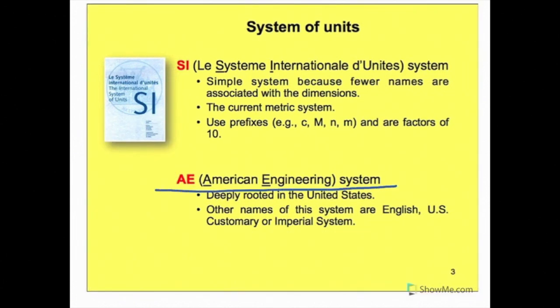The AE system is a system that's deeply rooted in the United States of America. What it means is that it has been used extensively in many papers, documents, projects, and so on in the United States. And since it is so prevalent or so widespread in their documents, it is still a system commonly used in their country. Other names of these systems are English system, the US customary system, or the imperial system. Basically, they are one and the same.